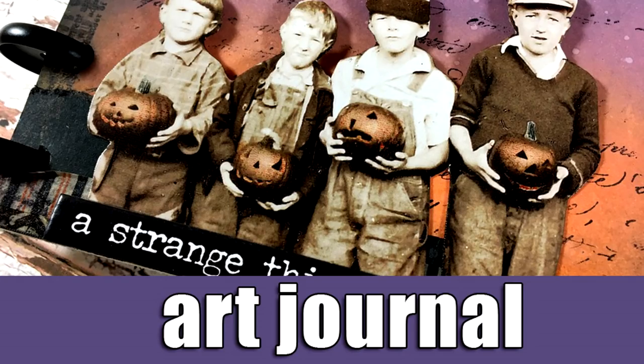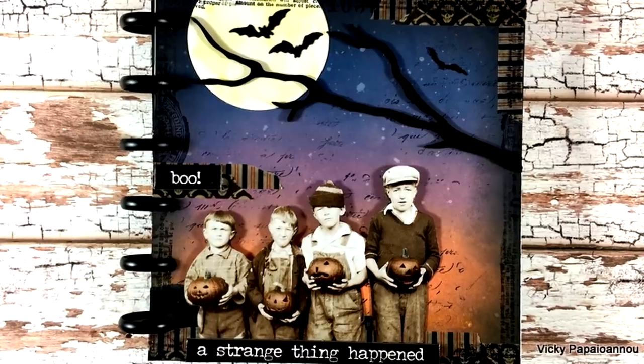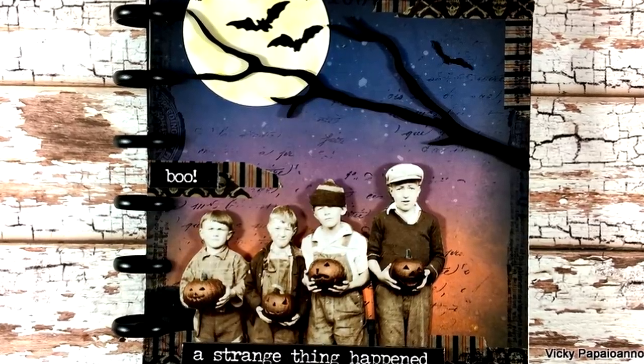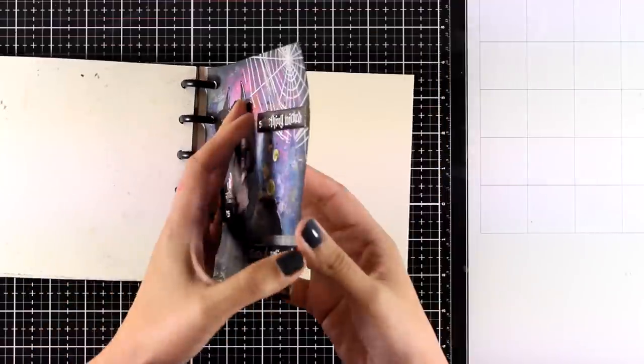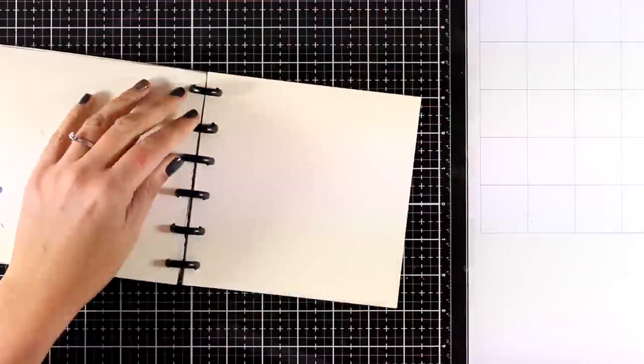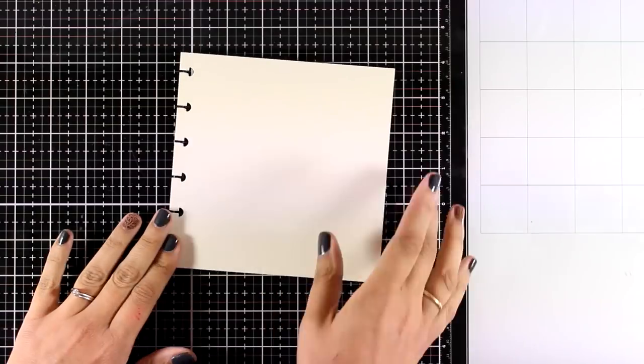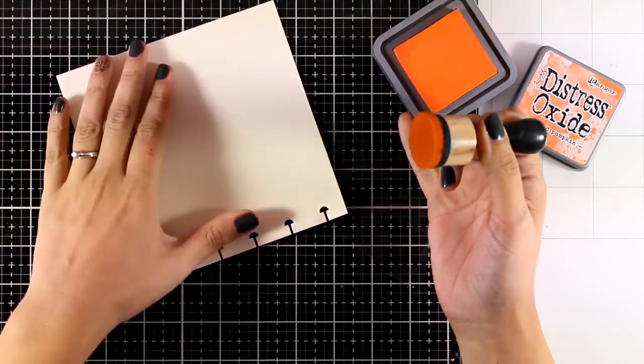Hi everyone and welcome back to another art journal layout. Today I have another Halloween themed page and I will be working on my 6x6 disk bound journal. This journal is custom made and I created this by using distress mixed media paper which takes distress oxide ink beautifully.